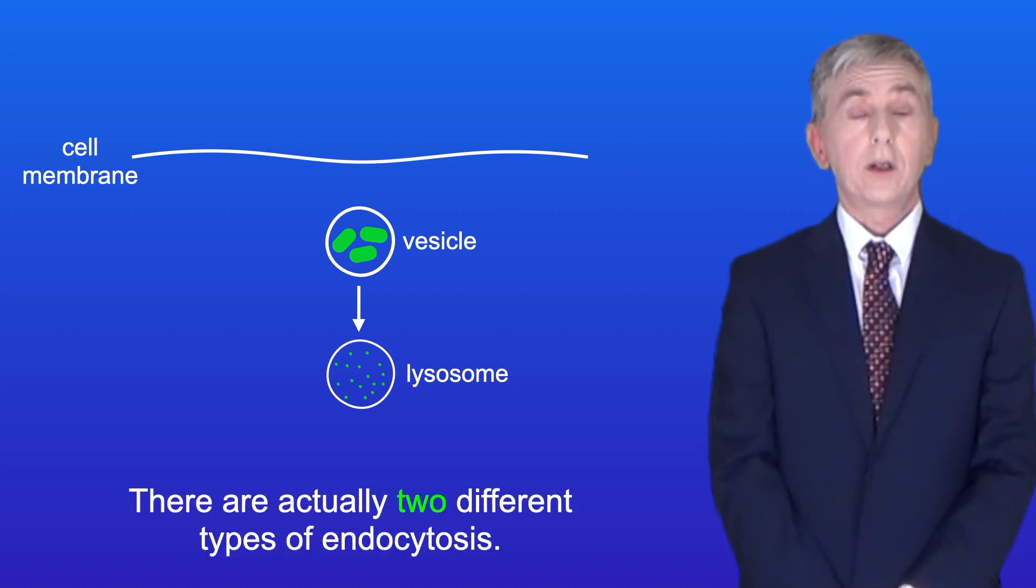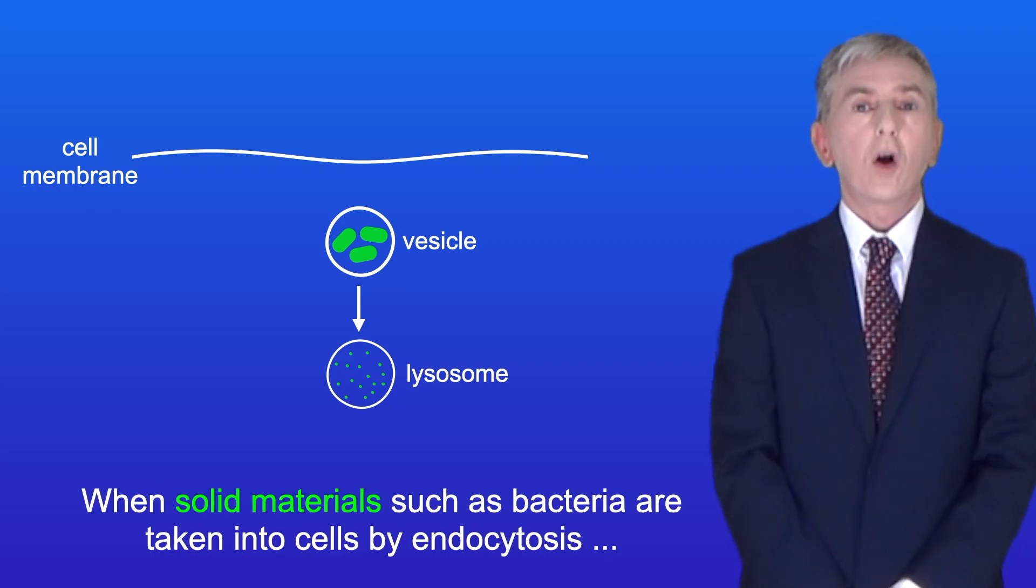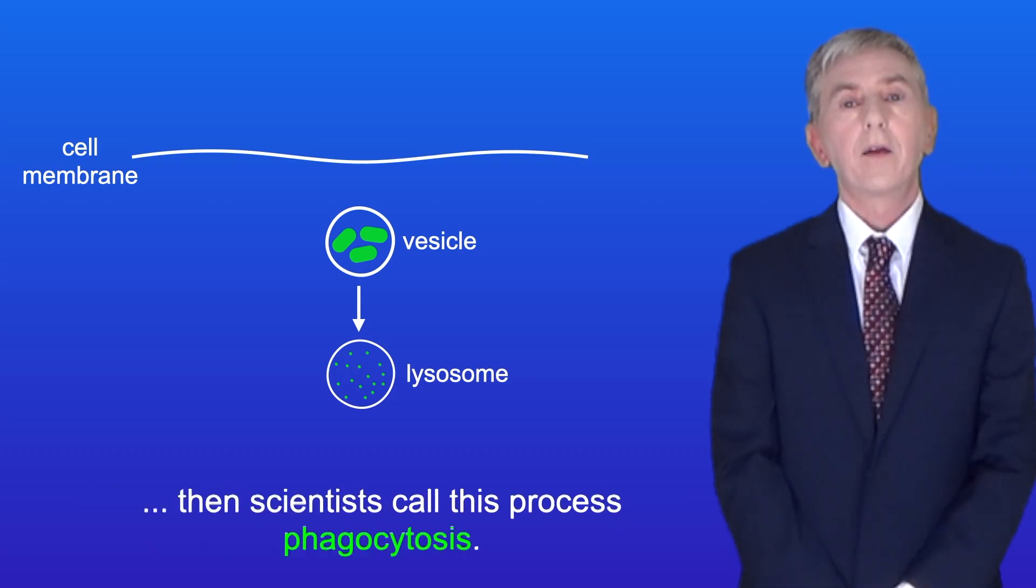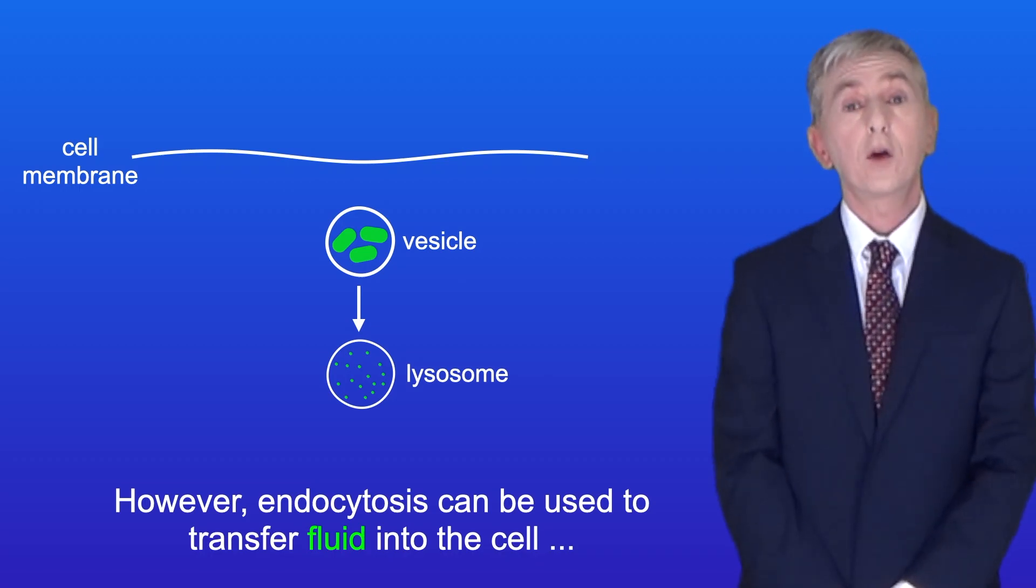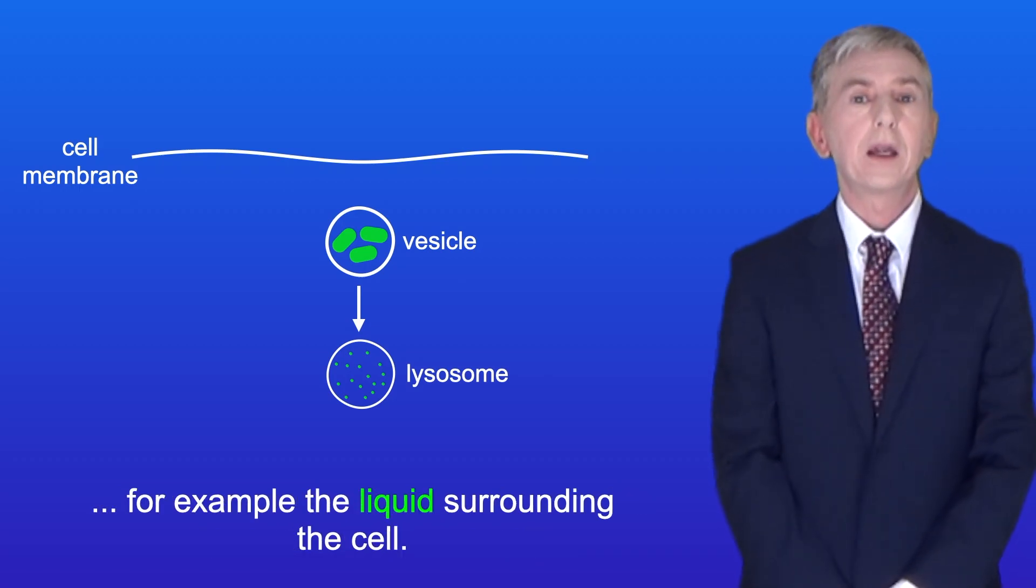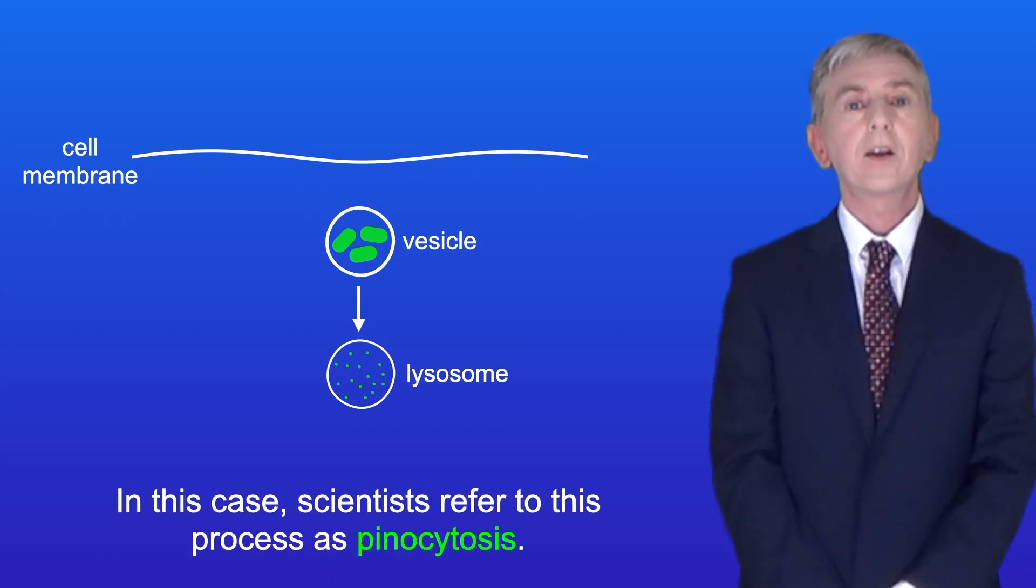Now there are actually two different types of endocytosis. When solid materials such as bacteria are taken into cells by endocytosis, then scientists call this process phagocytosis. However, endocytosis can be used to transfer fluid into the cell, for example the liquid surrounding the cell. And in this case, scientists refer to this process as pinocytosis.